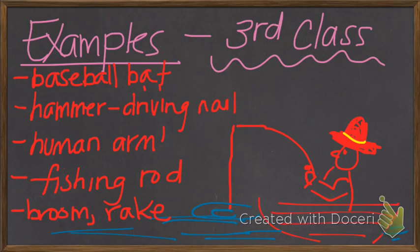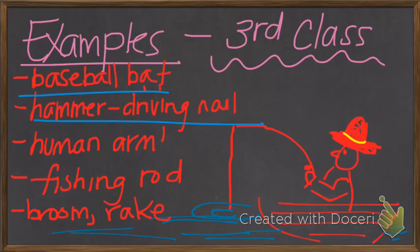So some examples for you, a baseball bat, a hammer when you're driving a nail, you're going to have a third class lever for that. Even something as simple as the human arm. So anything that you're going to do with the human arm, you've got the pivot point either at the elbow if you're talking about the forearm, or the pivot point would be your shoulder if you're talking about the entire arm. And that would be a third class lever. And a fishing rod, actually, is a really good example of a third class lever.